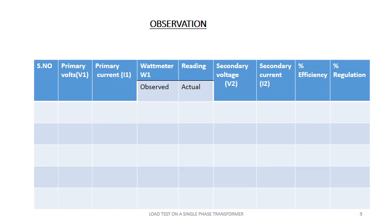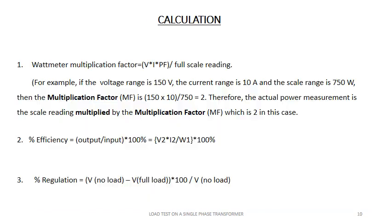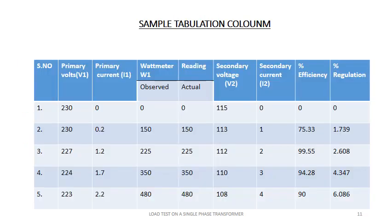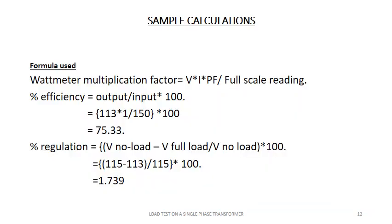This is the tabulation column for the load test on single-phase transformer. Some calculations are given showing how to calculate the wattmeter multiplication factor, percentage efficiency, and percentage regulation. A sample tabulation column is given for reference, done by students in the laboratory as a sample calculation for one reading.